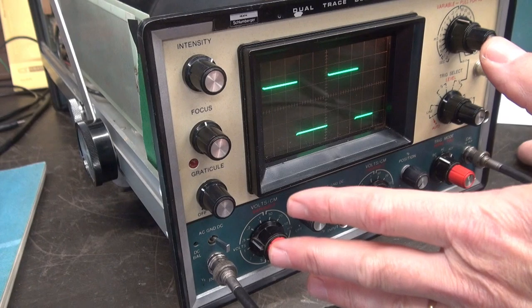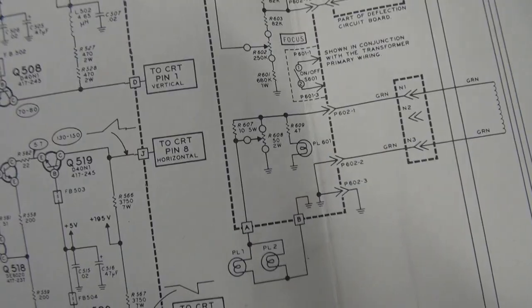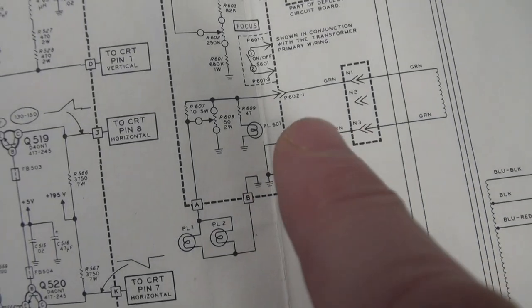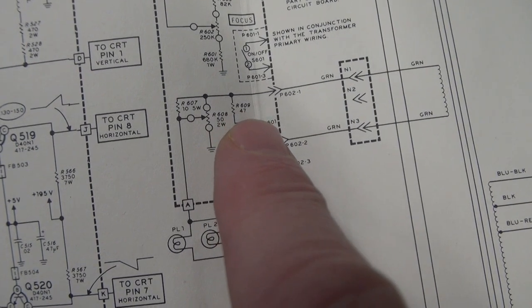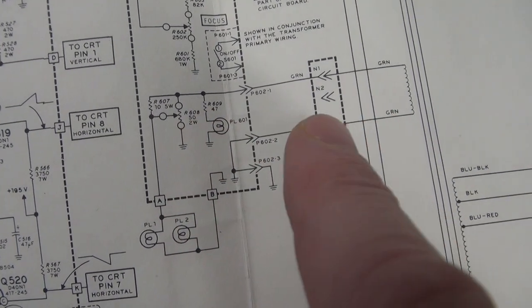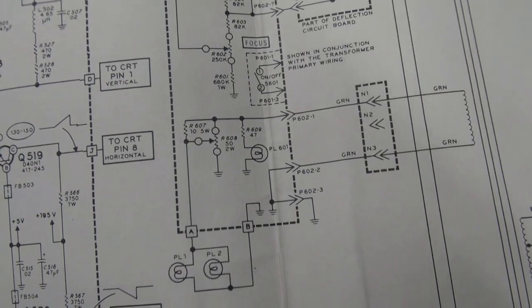There's the power lamp. You can see here's a 47 ohm resistor that feeds it. It's coming off of the 6 volt AC winding, so putting in an LED would be pretty easy.